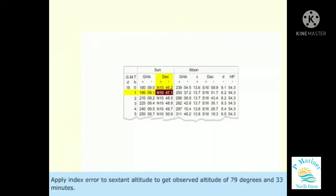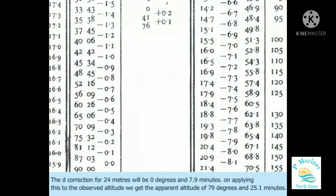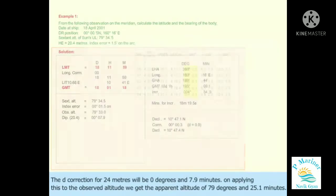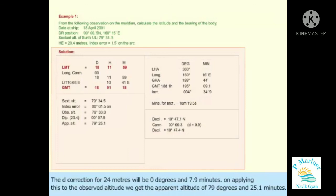Apply index error to the sextant altitude to get observed altitude of 79 degrees and 33 minutes. Dip correction for 20.4 meters will be 0 degrees and 7.9 minutes. On applying this to the observed altitude, we get the apparent altitude of 79 degrees and 25.1 minutes.